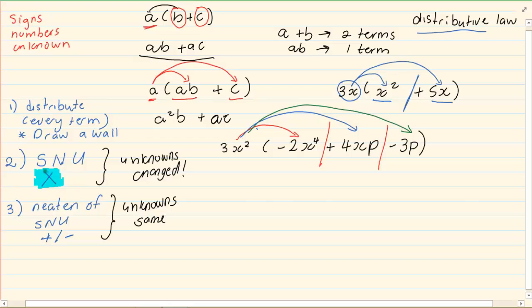Then we are going to apply the signs, numbers, unknowns. So if we take a positive times a negative, we got negative. 3 times 2 is 6. x to the power 2 times x to the power 4 is x to the power 6. Then we are going to say, this is a positive. So positive times positive gives us a positive. 4 times 3 is 12. x to the power 2 times x is x to the power 3 and we have a p. Then the last one is a positive times a negative gives us a negative. 3 times 3 is 9. x to the power 2, p.